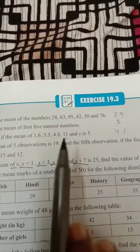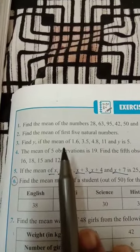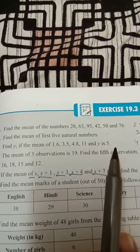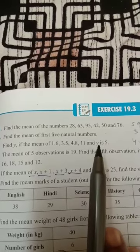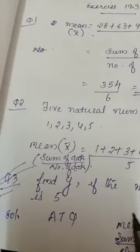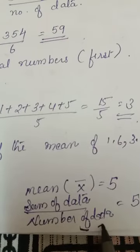Now next is question number 3. Find y if the mean of this observation and y is 5. Mean given is 5, mean given 5, you have to find out the value of y. One of the observations is y. Question number 3, mean given, x bar is 5. Mean formula: sum of data divided by number of data, that given is 5. Mean given 5, mean given is 5.